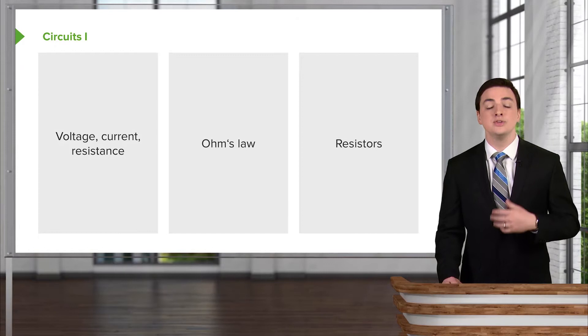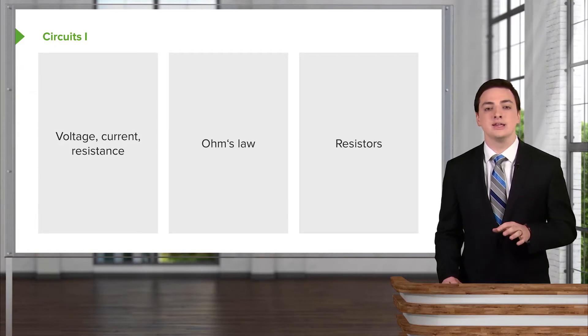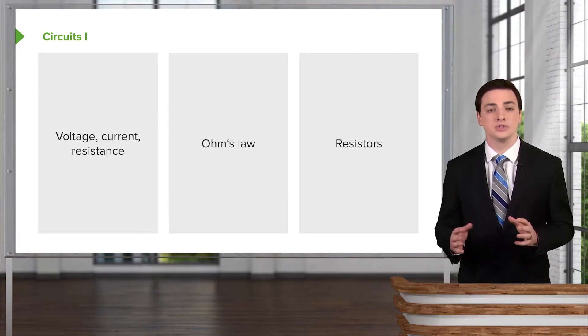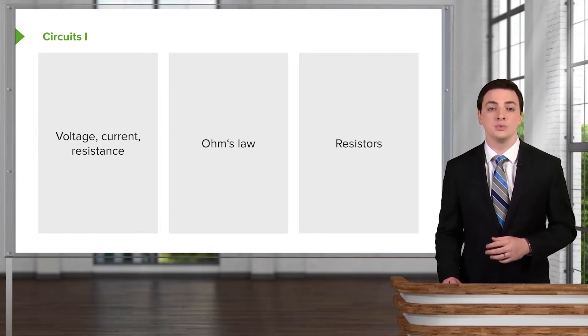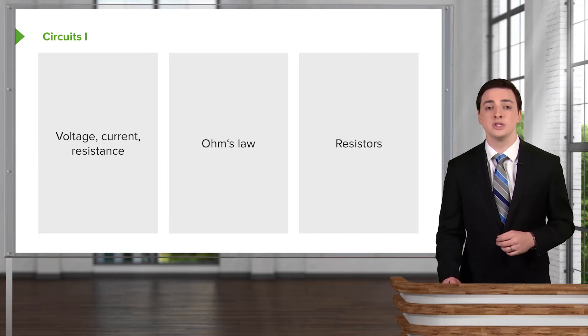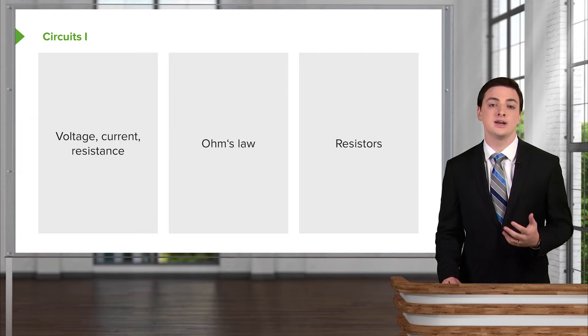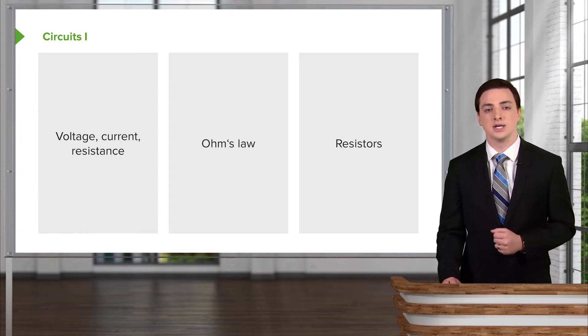In order to introduce this topic, we first need to have an idea about how we discuss the different variables that can be at play in a circuit. And then we'll discuss Ohm's law, which gives us a relationship between the variables that we introduce. And then finally we'll talk about resistors themselves and how to deal with them in a circuit and how to add them together.